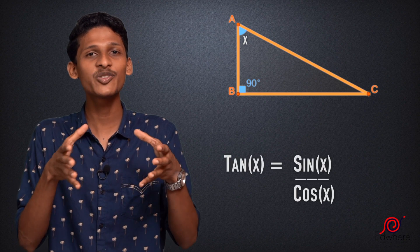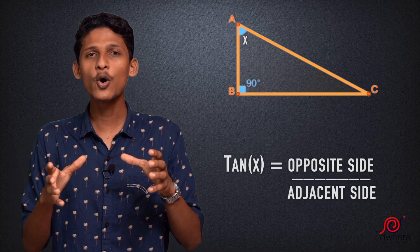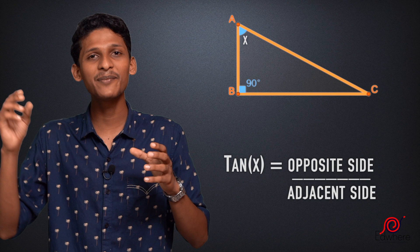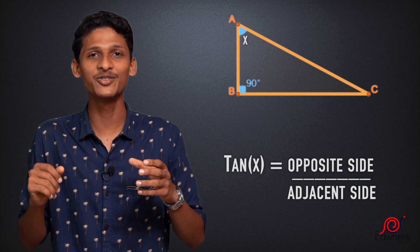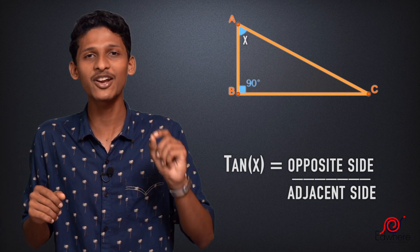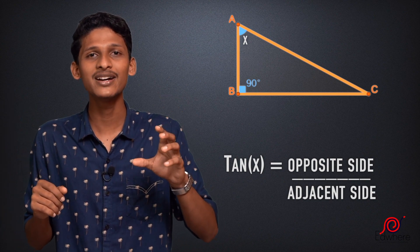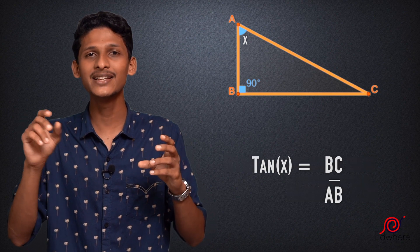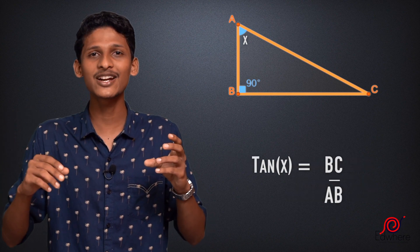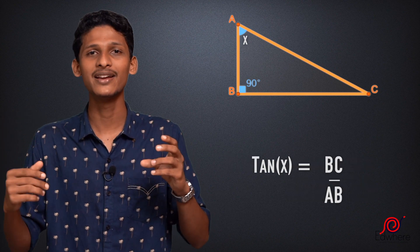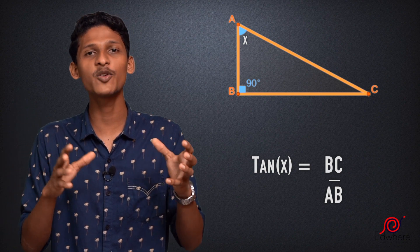Tan of x equals sin of x divided by cos of x. The opposite side divided by adjacent side gives the tan value. Tan of x is the opposite side BC divided by adjacent side AB. So BC by AB is tan of x.